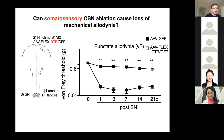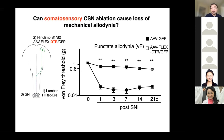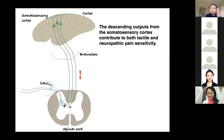We next investigated whether S1/S2 corticospinal neurons are required for mechanical allodynia. We showed that after SNI, ablation of only the S1/S2 corticospinal neurons — specifically those with dorsal horn projections — was sufficient to reduce both punctate and dynamic allodynia. To briefly summarize this first part: the descending outputs from the somatosensory cortex contribute to both tactile and neuropathic pain sensitivity.